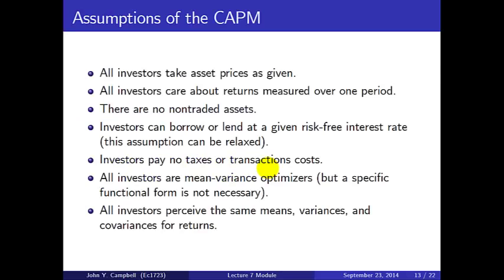I'm going to make a number of assumptions. It's quite a long list, but one can obtain very powerful results with these assumptions. Let's assume that all investors take asset prices as given — they're all small, not large enough to manipulate prices with their demands. Let's assume all investors care about returns measured over one period, that there are no non-traded assets, and investors can borrow or lend at a given risk-free interest rate. This assumption can be relaxed. We're going to ignore taxes and transactions costs.